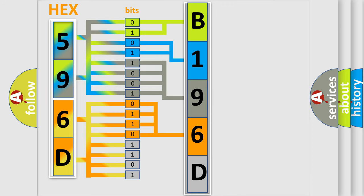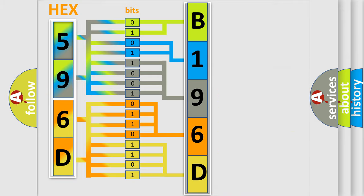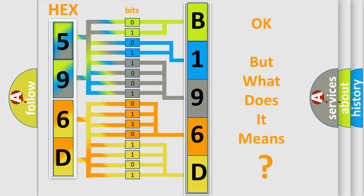A single byte conceals 256 possible combinations. We now know in what way the diagnostic tool translates the received information into a more comprehensible format. The number itself does not make sense to us if we cannot assign information about what it actually expresses.